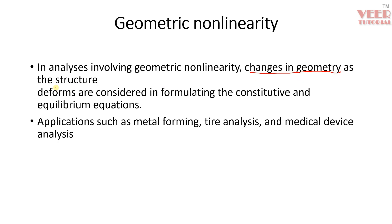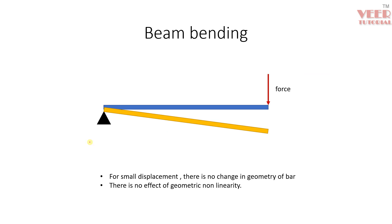Now let's learn about geometric nonlinearity. In geometric nonlinearity, we consider the changing geometry as the structure deforms due to loading and equilibrium conditions. Examples include metal forming, tire analysis, and medical devices. Consider beam bending: when a force is applied onto a beam it bends slightly.